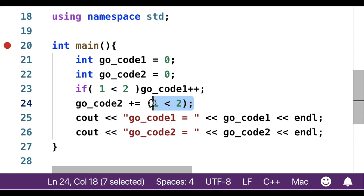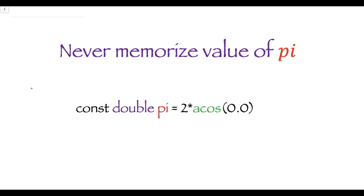So here you can see that we can also write if condition like this. Fifth is never memorize value of pi. In some problems we need the accurate value of pi, so we can use this statement to find the accurate value of pi. Let's see.